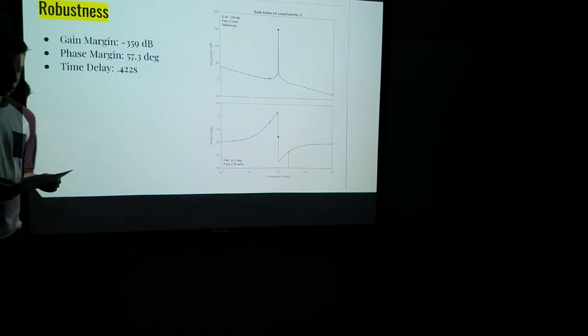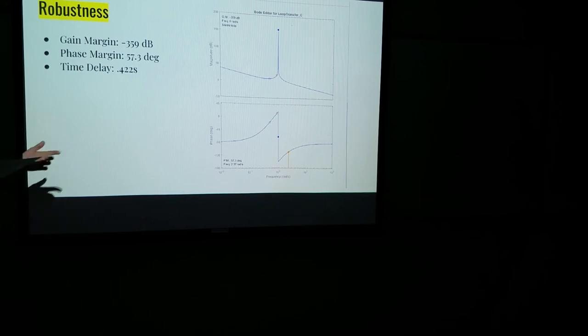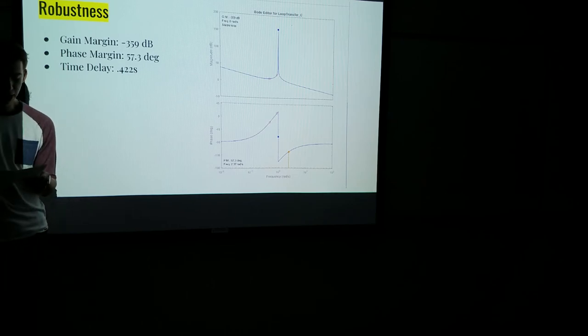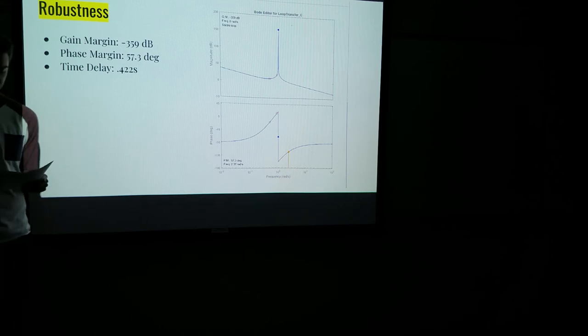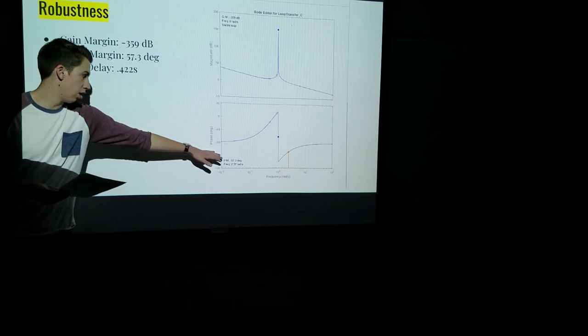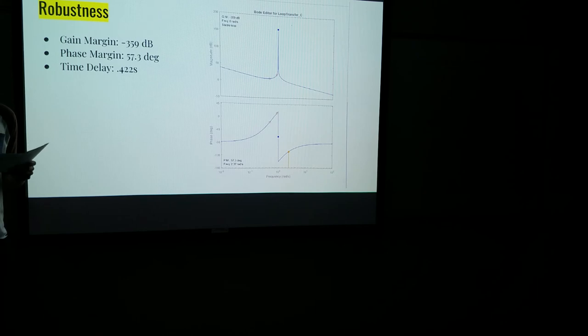So here for robustness, we can see a gain margin that we calculated to be negative 359 decibels. This number is very close in magnitude to zero. Because we have a unique transfer function, our Bode plots are not ideal. MATLAB says that our gain margin is negative 359 decibels. However, the phase, as you can see in this plot down here, our phase will never cross 180. So to us, it seems like you can turn up the gain margin to as high as you want.